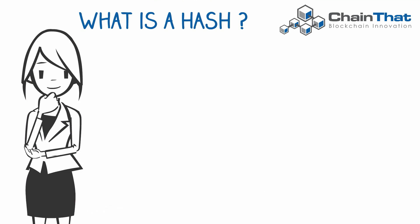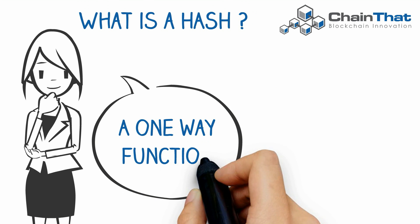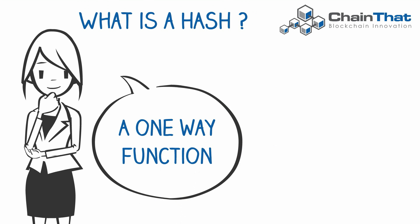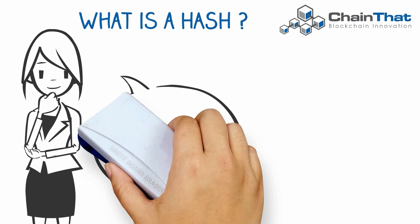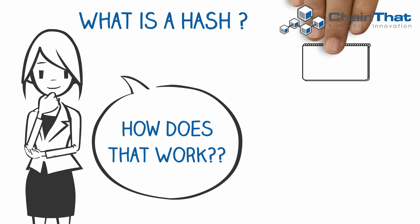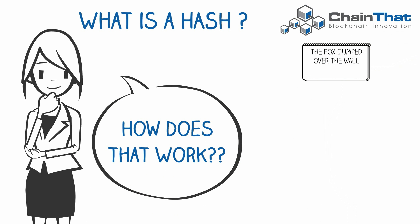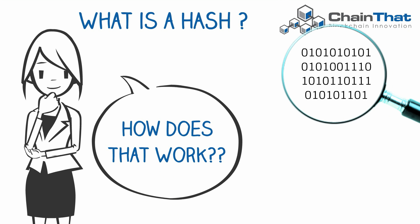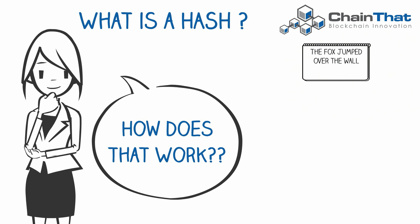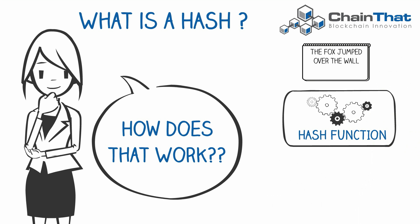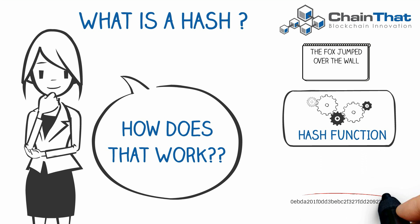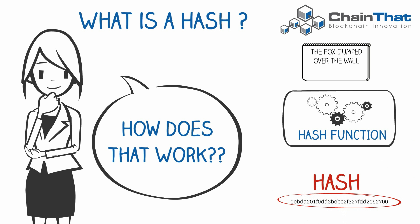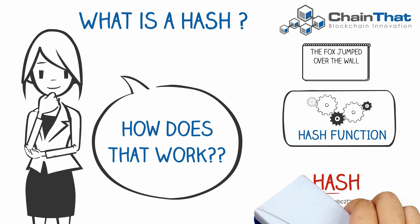A hash is a one-way function that has multiple uses in blockchain and decentralized systems. All digital media like documents, movies, or music are strings of binary digits — ones and zeros. A hash function takes any digital media and runs an algorithm on it to produce a fixed length and unique digital output known as a hash. This fixed length output is normally much smaller than the original input.